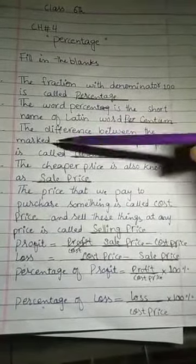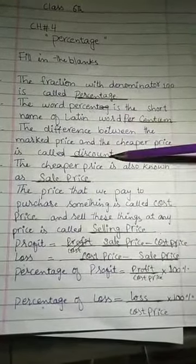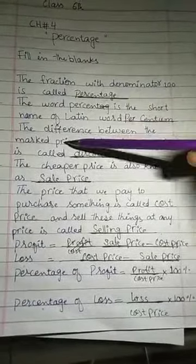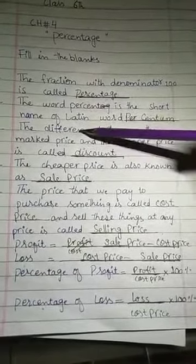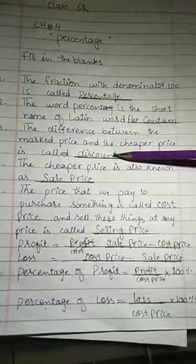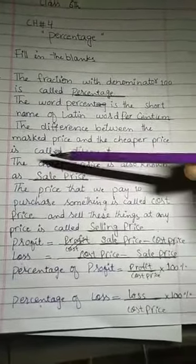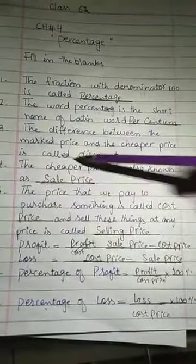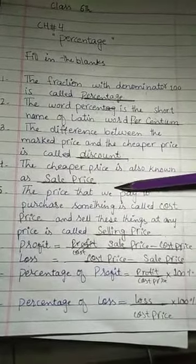Number 3: The difference between the marked price and the cheaper price is called discount. Number 4: The cheaper price is also known as sale price.